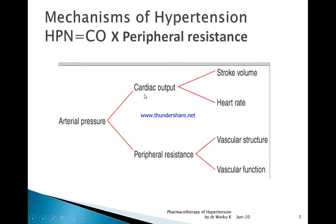Arterial pressure is the product of cardiac output times peripheral resistance. Cardiac output is in turn the product of stroke volume times heart rate, whereas peripheral resistance is a function of vascular structure and vascular function. Any drug that decreases heart rate, stroke volume, cardiac output, or peripheral resistance through vascular structure or function will lower blood pressure.